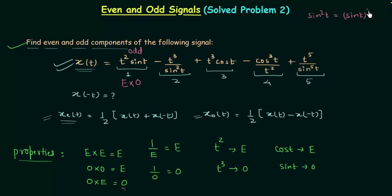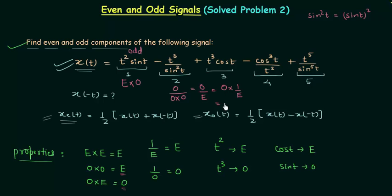Second term: t³/sin²(t). t³ is odd. In the denominator, sin²(t) = sin(t) × sin(t) = odd × odd = even. So we have odd/even, which equals odd × (1/even) = odd × even = odd. Therefore t³/sin²(t) is part of the odd component.